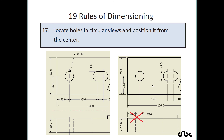Rule number 17: locate holes in circular views and position them from the center. Since you cannot place dimensions for hidden lines, holes should always be dimensioned in the circular view. For positioning a hole, always use the center position as the reference.